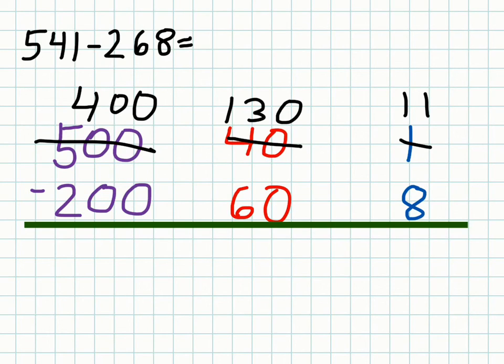11 minus 8 gives me 3, 130 minus 60 is 70, and 400 minus 200 is 200. Now I have my hundreds place, tens place, and ones place, and I can put them together for the answer: 273.